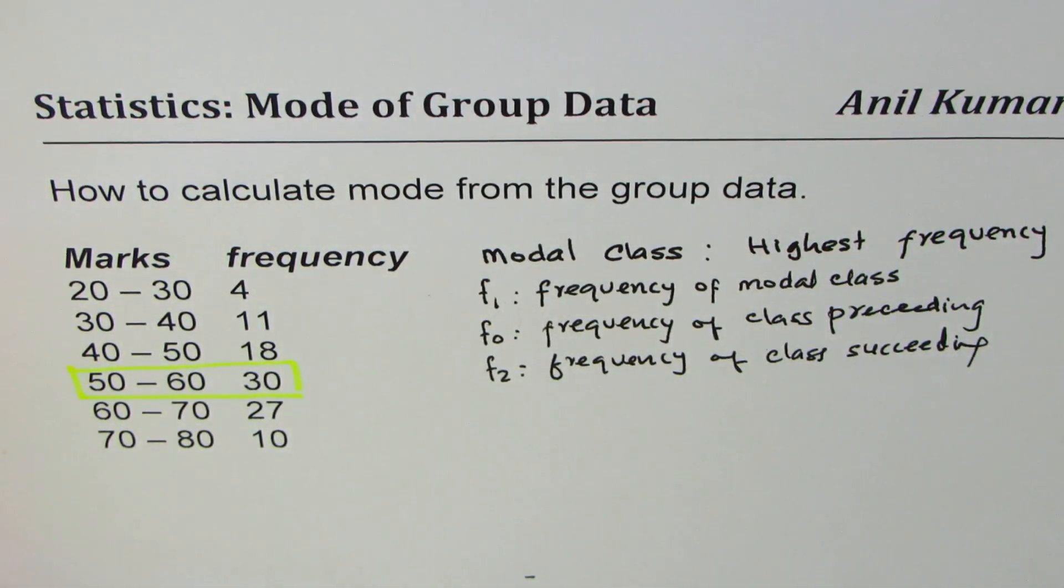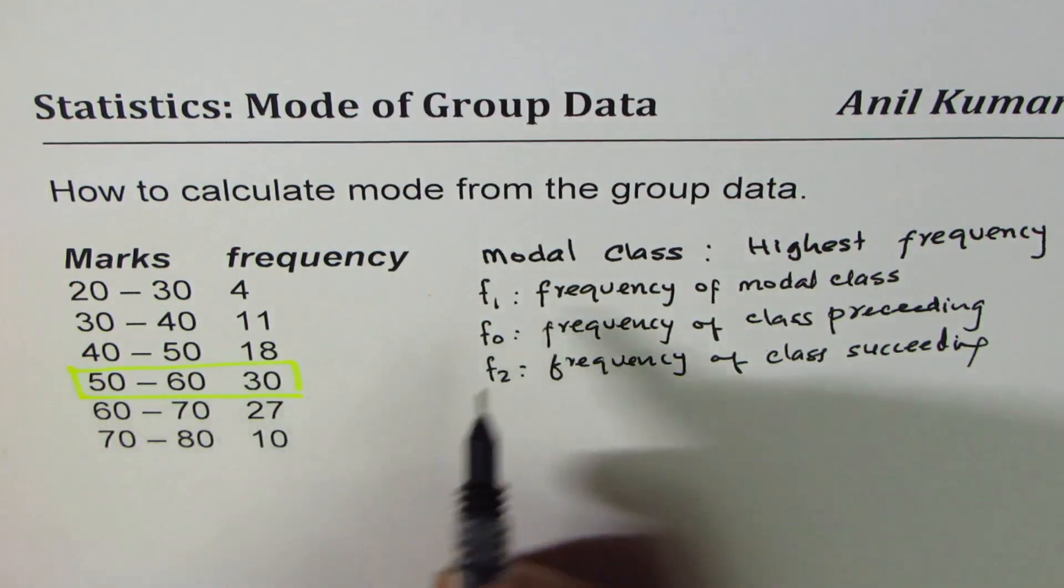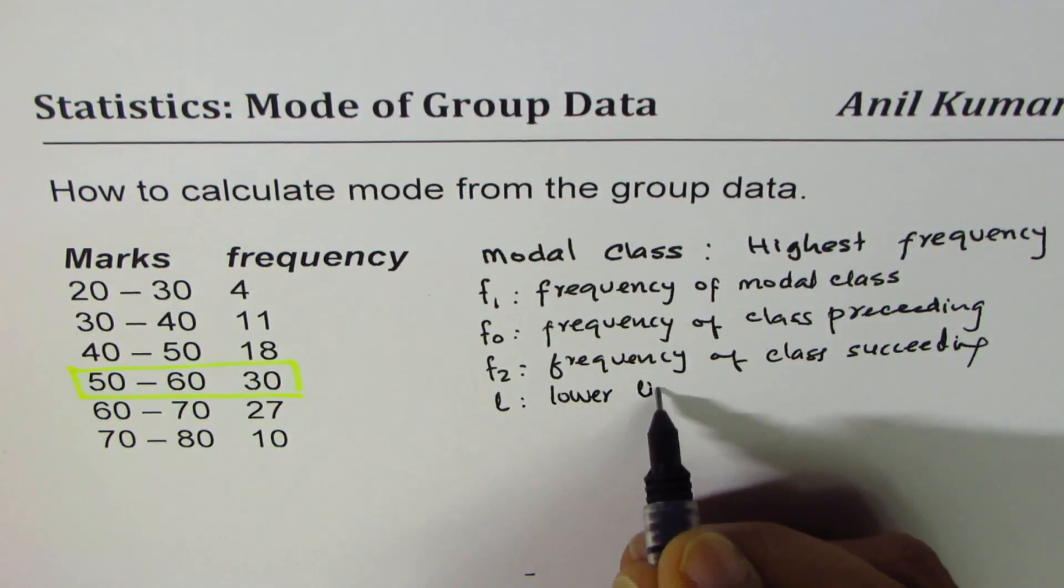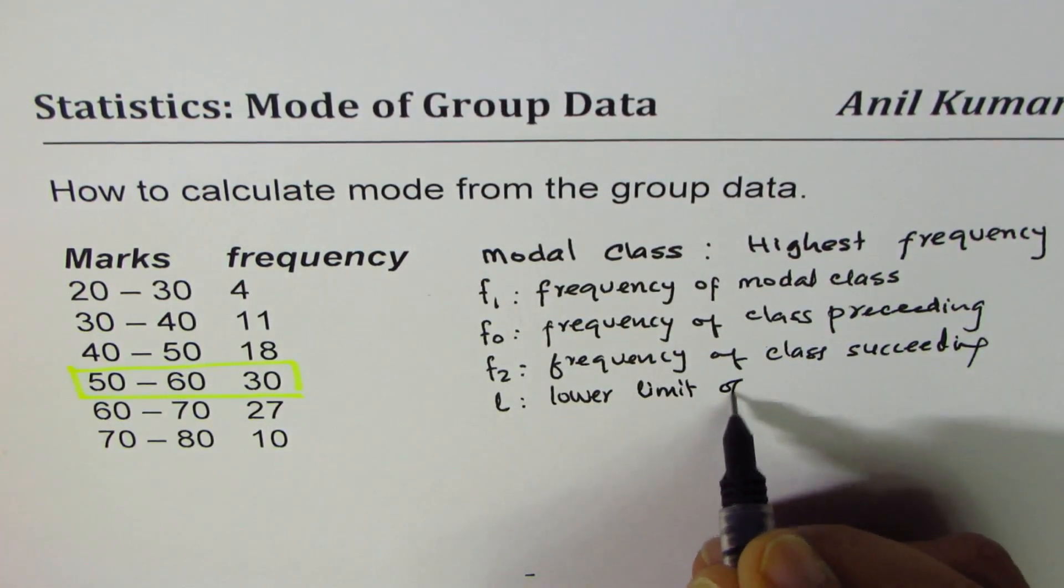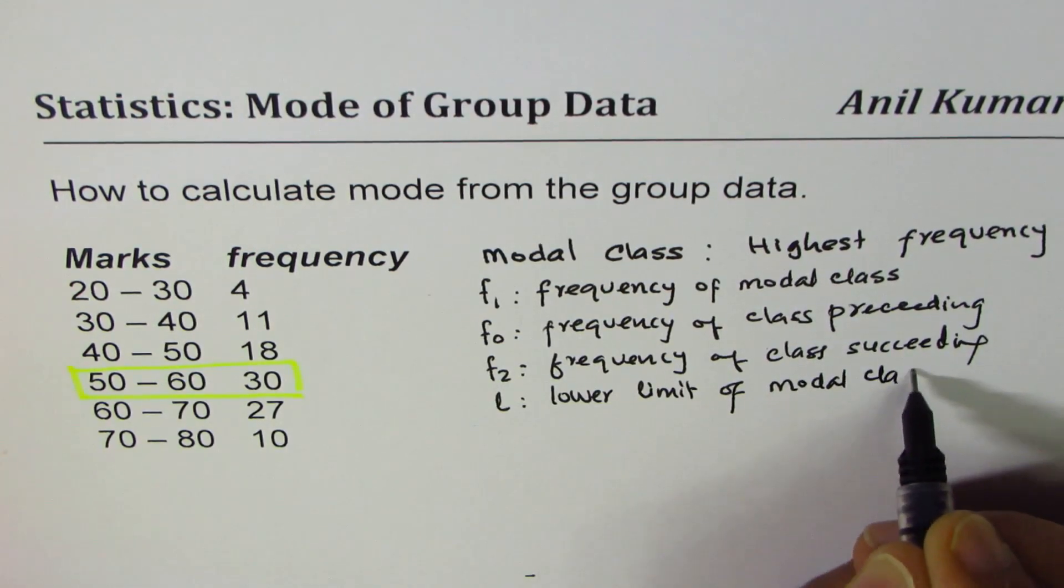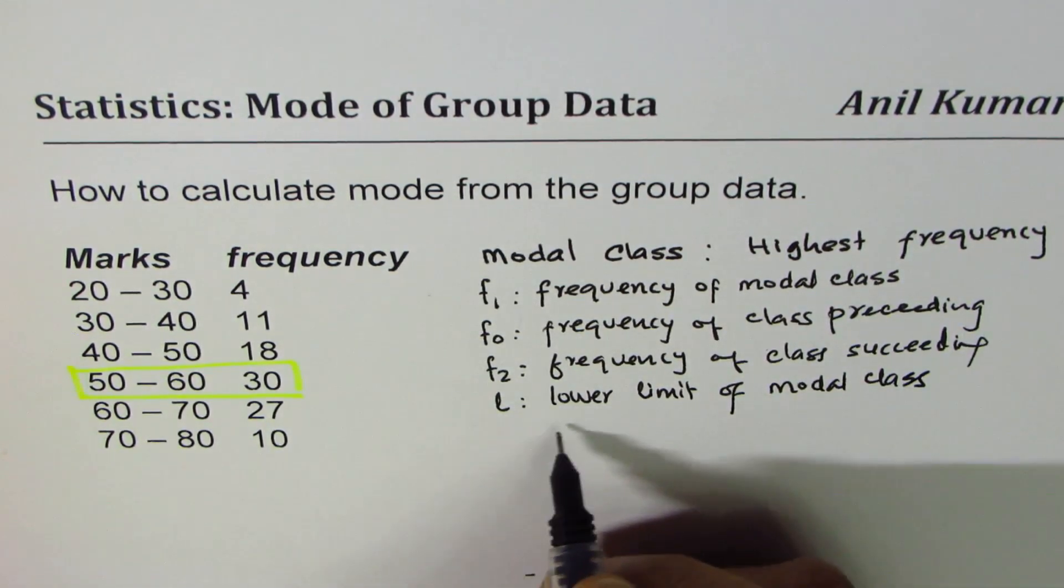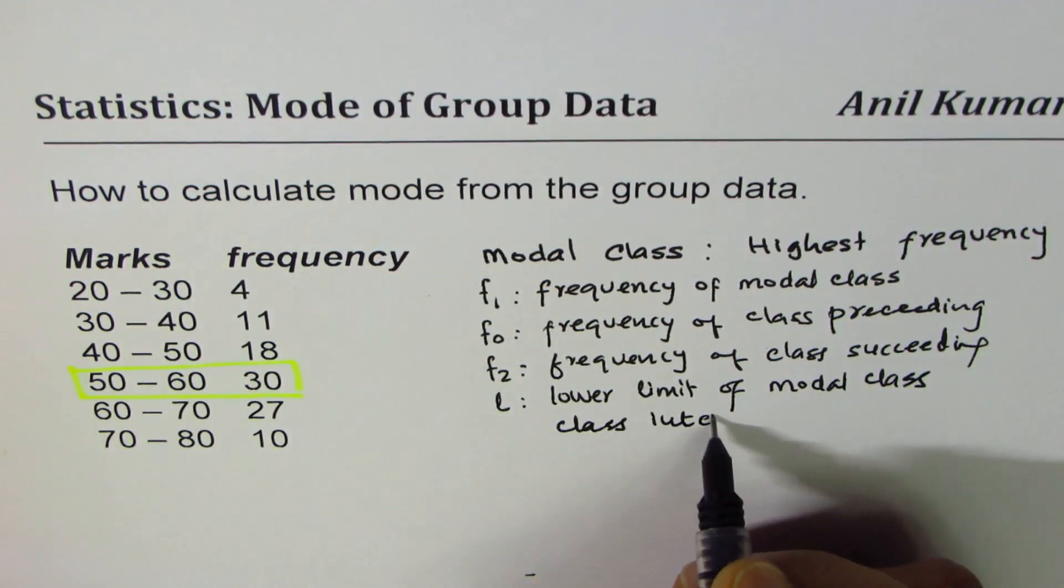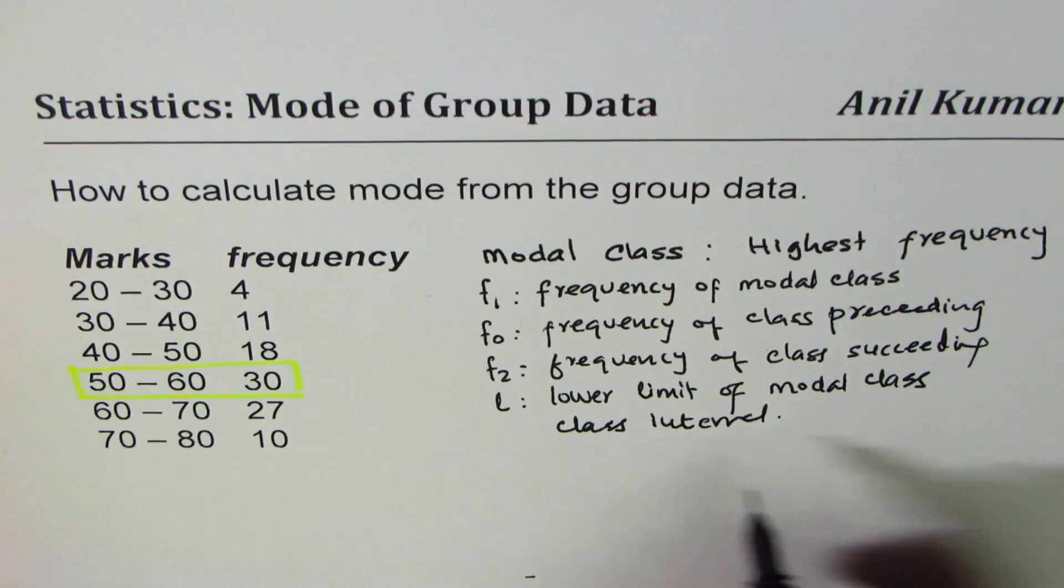We'll use this lower limit of modal class, we'll write L for this lower limit of modal class, and the class interval. So let me use the symbol H for class interval.